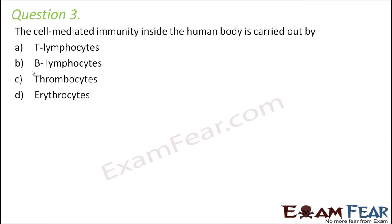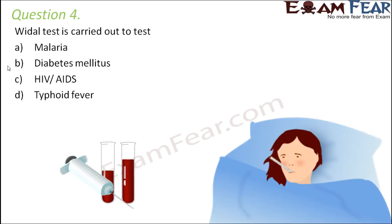Question number three: cell-mediated immunity inside the human body is carried out by which of the following — T lymphocytes, B lymphocytes, thrombocytes, or erythrocytes? Cell-mediated immunity is carried out by the T cells, that is, T lymphocytes.